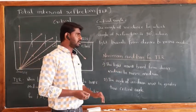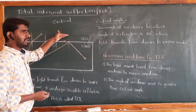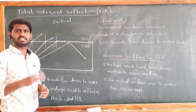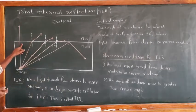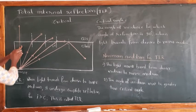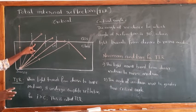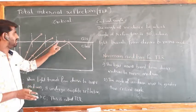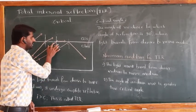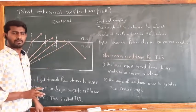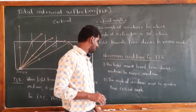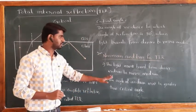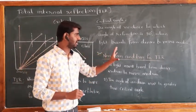The second condition: even if light is moving from denser to rarer, TIR doesn't occur at all incident angles. The angle of incidence must be greater than the critical angle. Only then, instead of refraction, we get complete internal reflection.